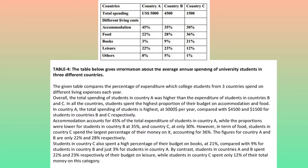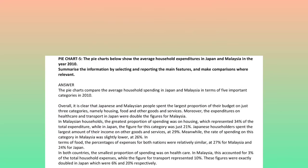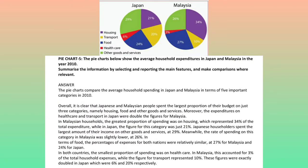By contrast, students in Countries A and B spent 22% and 23% respectively of their budget on leisure, while students in Country C spent only 12% of their total money on this category. The pie charts below show the average household expenditures in Japan and Malaysia in the year 2010. Summarize the information by selecting and reporting the main features and make comparisons where relevant.